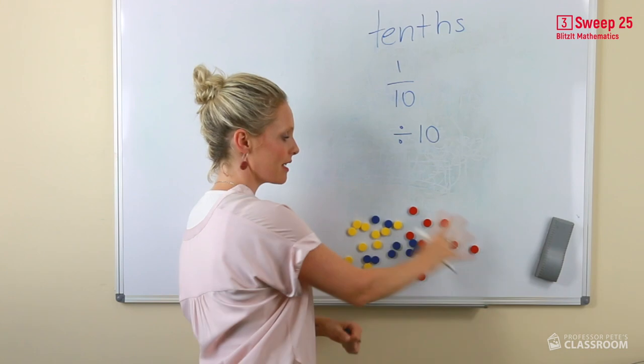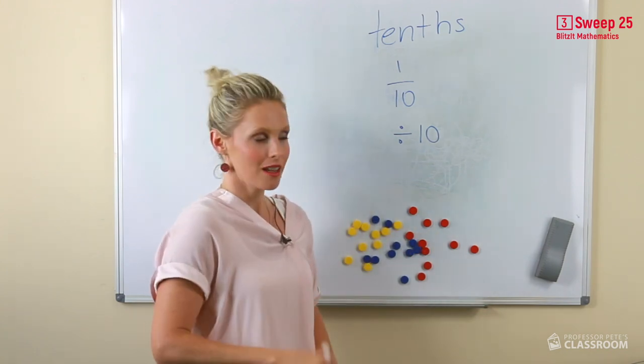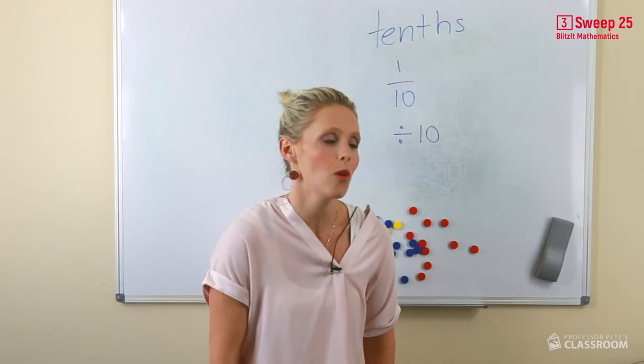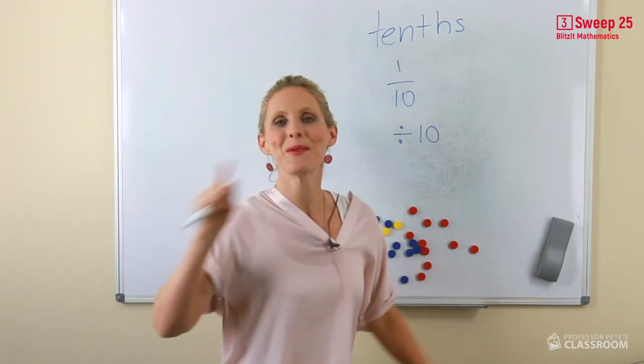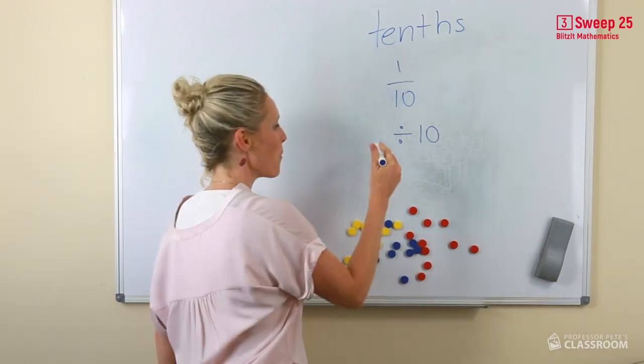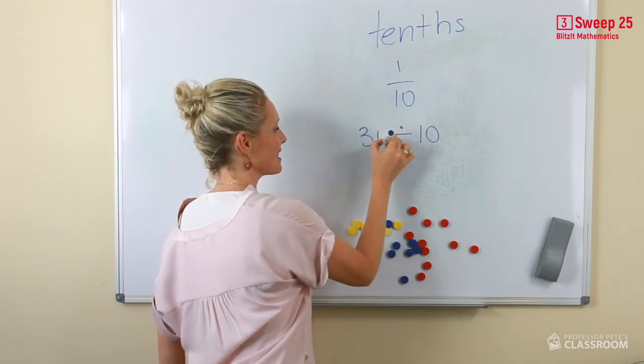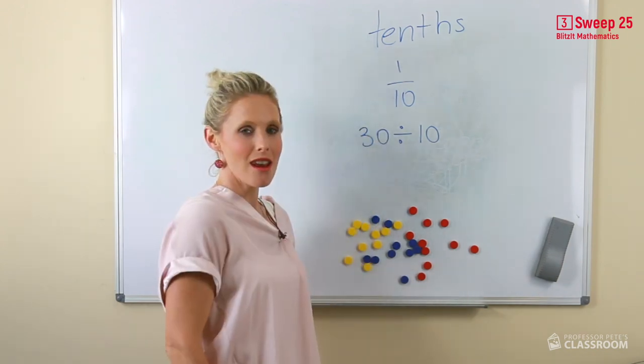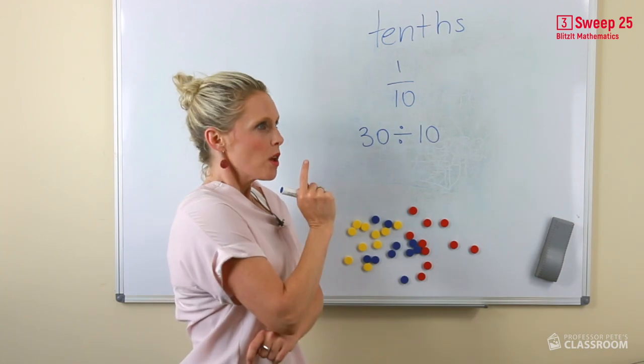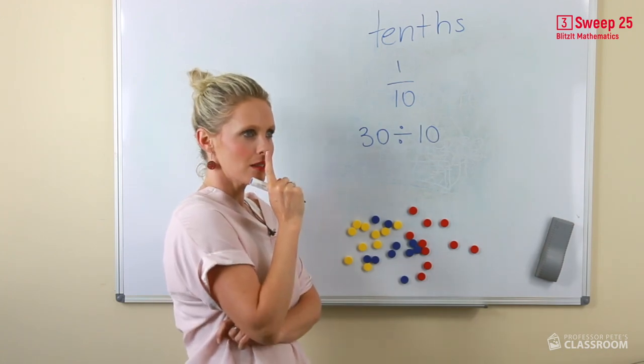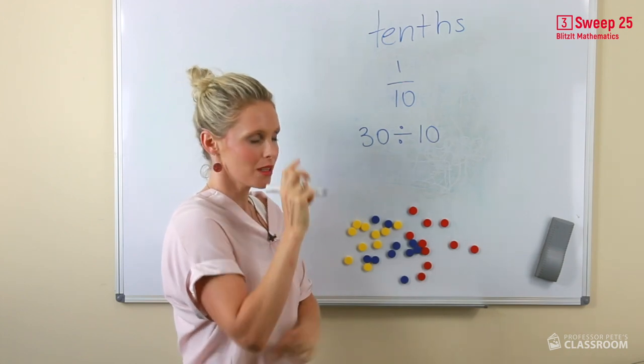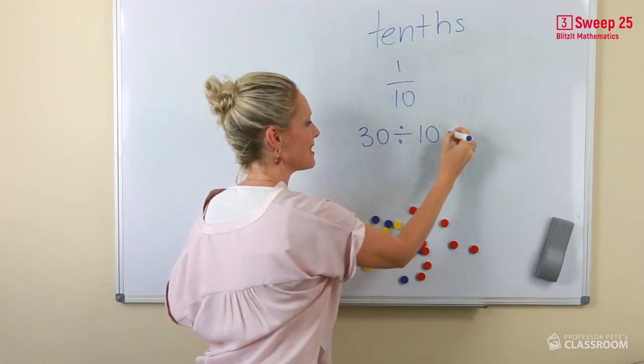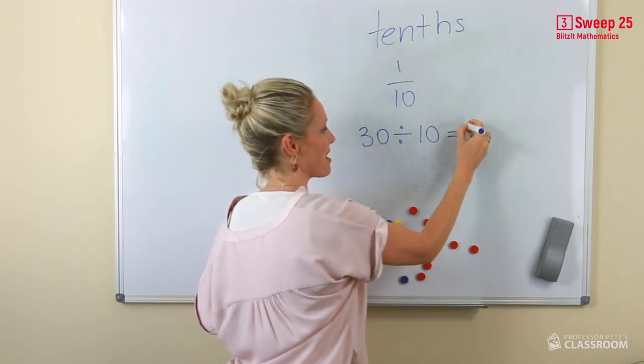Now, here is 30 counters. And do we want to spend all day dividing those counters? No! We already know it. What is the known number fact? 10 times what equals 30? Or 30 divided by 10 equals? What's my fact family?